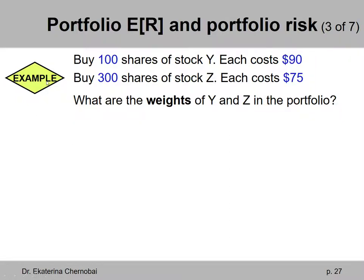Let's look at the following example. In this example, the question is to calculate the weights of two stocks. You're buying shares of stock of company Y and shares of stock of company Z. You're buying 100 shares of stock Y, each share costs $90. And you're buying 300 shares of stock Z, each share costs $75.